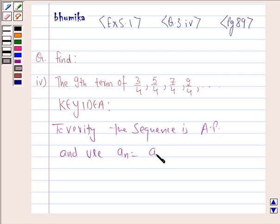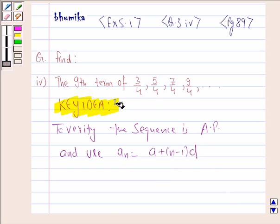a_n equals a plus (n minus 1) times d as the formula to find the 9th term of the sequence. So this is the key idea, just remember this.